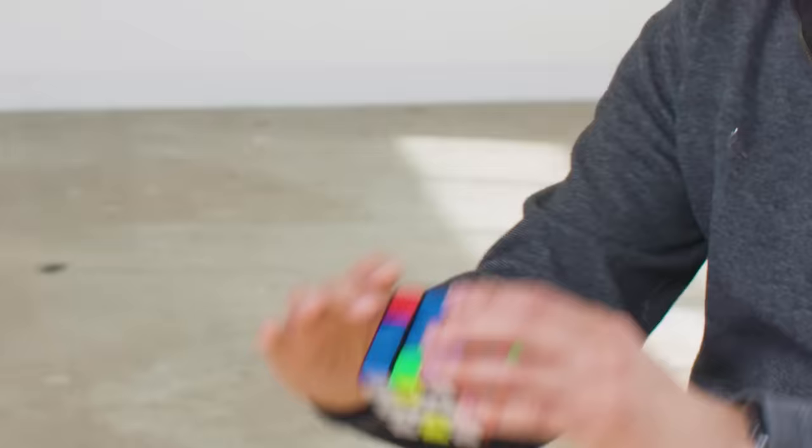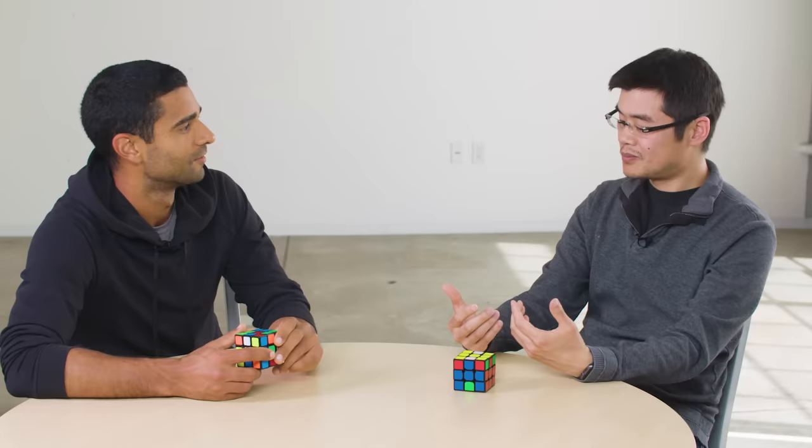The improvement in the cube technology has caused a change in some of these ergonomics. That move that I showed you earlier, there was absolutely no way you could make a turn with this fourth ring finger. The way that people turn the cube and the hand movements that people use evolved as a result of cubes getting better.